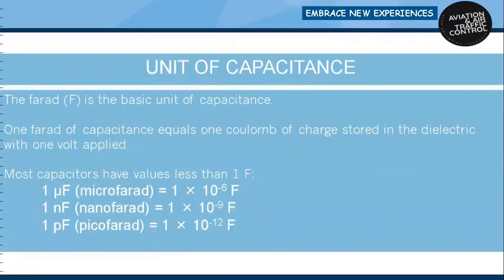Unit of capacitance: the farad (F) is the basic unit of capacitance. One farad of capacitance equals one coulomb of charge stored in the dielectric with one volt applied. Most capacitors have values less than one farad. One microfarad equals 10 to the power minus 6 farads. One nanofarad equals 10 to the power minus 9 farads. One picofarad equals 10 to the power minus 12 farads.